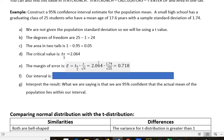And that we just found was 2.064 for our critical value. We know the standard deviation for the sample was 1.74 with the square root of 25. And that gives us the value of 0.718. That's the margin of error.